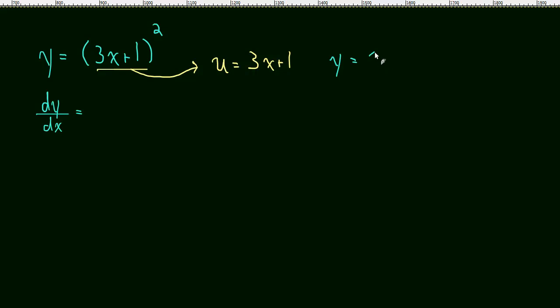We get y equals u squared and we get u equals 3x plus 1. Now both of these equations I can take the derivative of separately, and I could do that relatively easily.